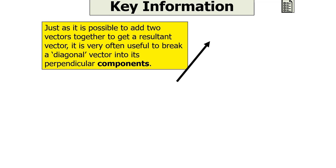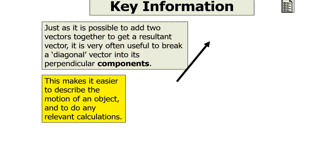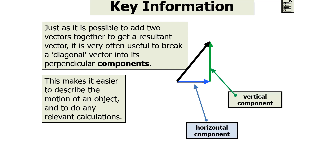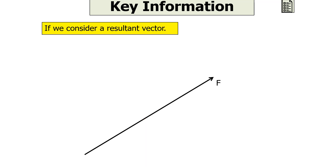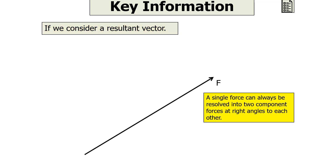Just as it's possible to add two vectors together to get a resultant vector, it's often very useful to break a diagonal or resultant vector into its perpendicular components. This makes it easy to describe the motion of an object and to do any relevant calculations. We can split our resultant vector into horizontal and vertical components, which allows us to describe the horizontal and vertical motion of the object. A single force or vector can always be resolved into two component forces or vectors at right angles to each other.